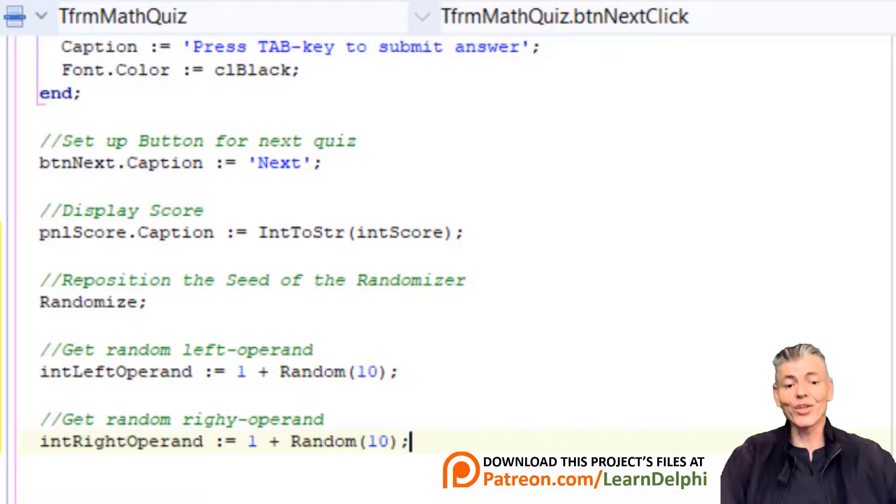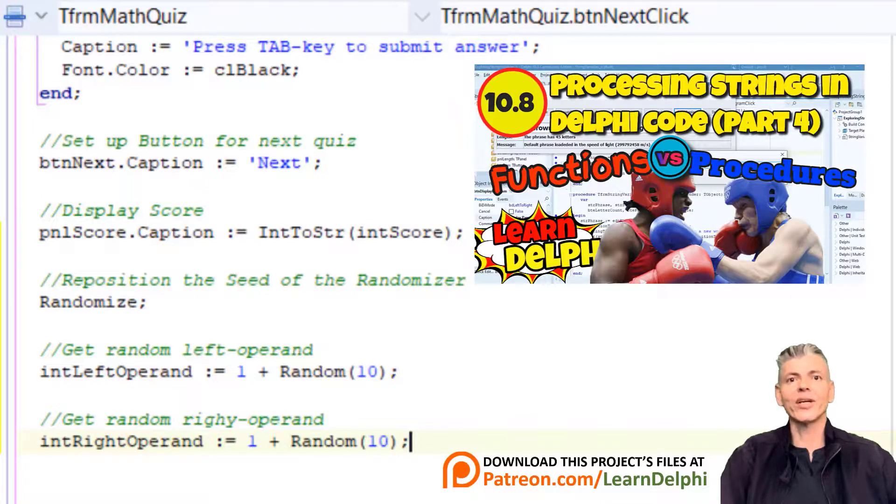That will be the number on the right side of the operator. Notice we only call the randomize procedure once in our code. You don't have to call it every time you use the random function. Also notice the result is assigned to a variable, so random is a function and not a procedure, like the inc and dec procedures we explored last time. If you are not familiar with the difference between functions and procedures, go back to unit 10.8 and watch that video.